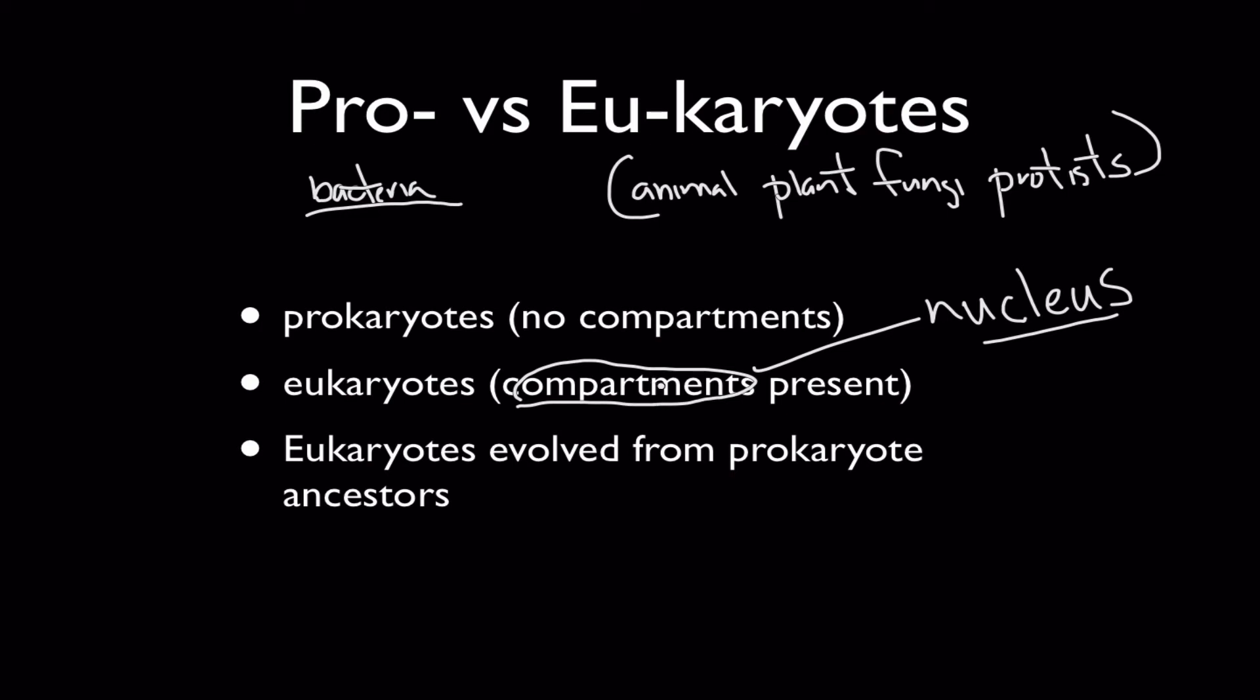Lastly, eukaryotes of course have evolved from prokaryote ancestors, so prokaryotes are the older, simpler form, still going strong today. Most of the cells on earth are bacterial cells, they're everywhere. Some of them evolved billions of years ago into eukaryotes which are the type of cell that builds up multicellular organisms like you and me.